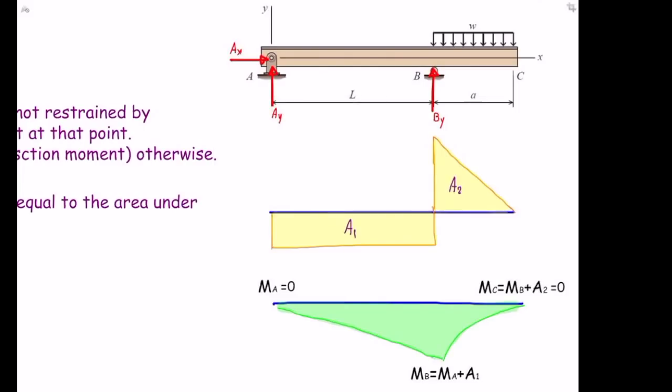An important relationship between the shear and moment diagrams: if the shear diagram is constant, the moment diagram is linear. If the shear diagram is linear, the moment diagram is a second-order polynomial. If the shear diagram is second-order, the moment diagram is third-order. In general, the moment diagram is always one degree higher than the shear diagram.